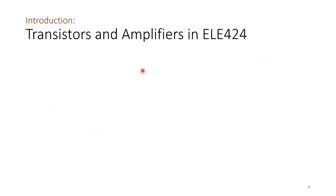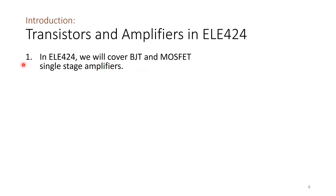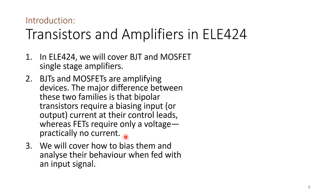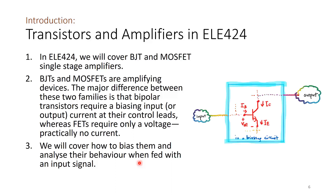In ELE 424 we will cover BJT and MOSFET single-stage amplifiers. BJT and MOSFET are amplifying devices. The major difference between the two families is that bipolar transistors require a biasing input current at their control leads, whereas FETs or MOSFETs require only a voltage — practically no current at their input. We will cover how to bias them and analyze their behavior when fed with an input signal.